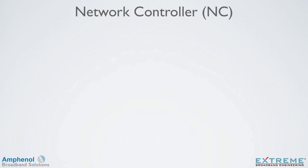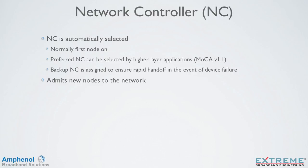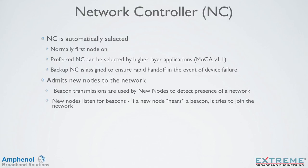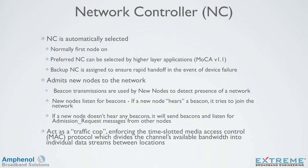Since MOCA is an in-home network, it needs something to control the network. One MOCA device assumes the role of network controller and is automatically selected — usually the first device on. Starting with MOCA 1.1, the network controller can be selected manually. A backup network controller is assigned in the event something happens to the main network controller. The network controller admits new nodes to the network and sends out beacon transmissions. New nodes listen for the beacon and request to join the network. If a device doesn't hear a beacon, it assumes it's the first device on and sends out a beacon for other devices to join its network. The network controller acts like a traffic cop and tells all other MOCA devices when they can receive and transmit data.